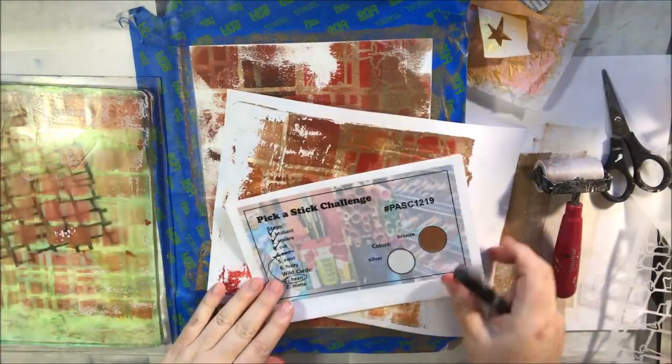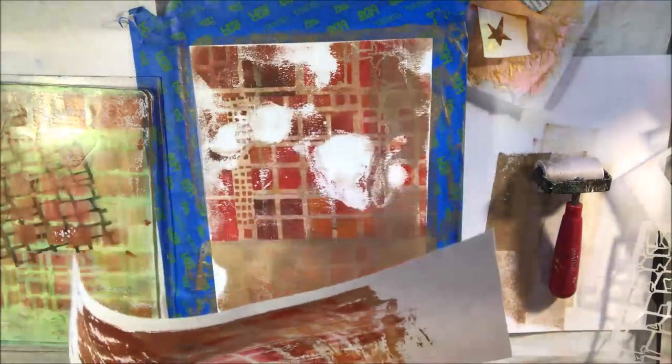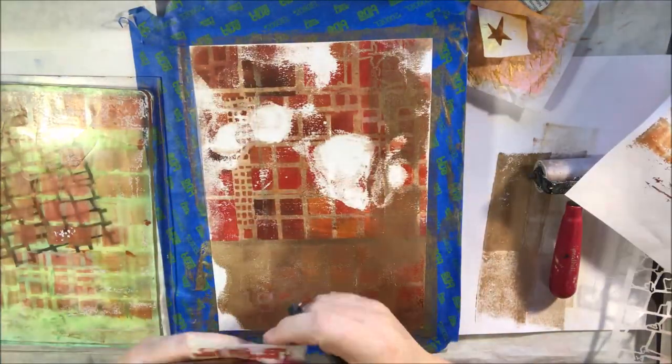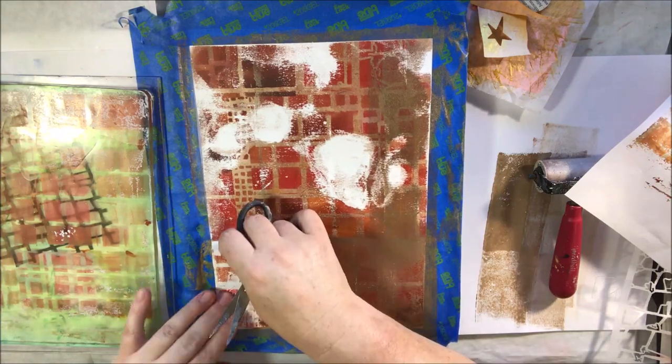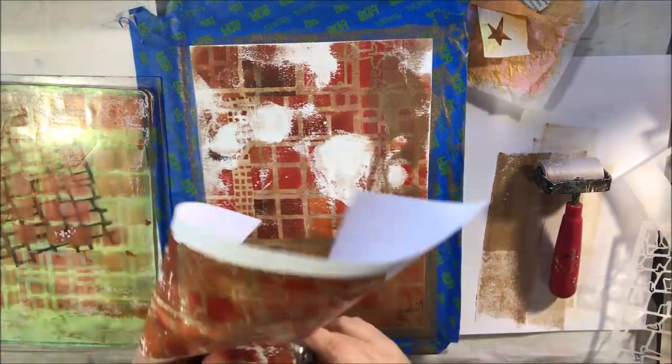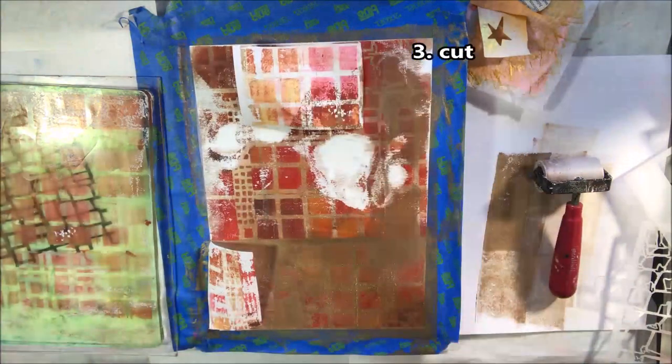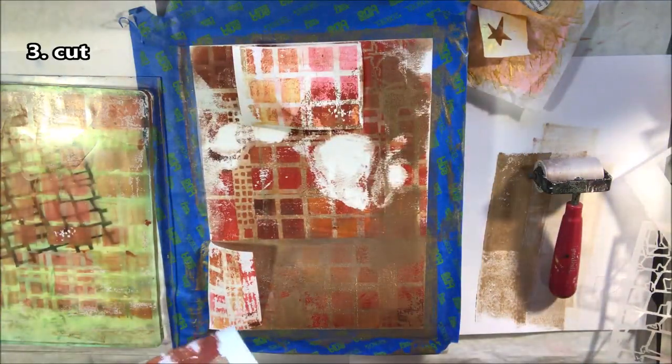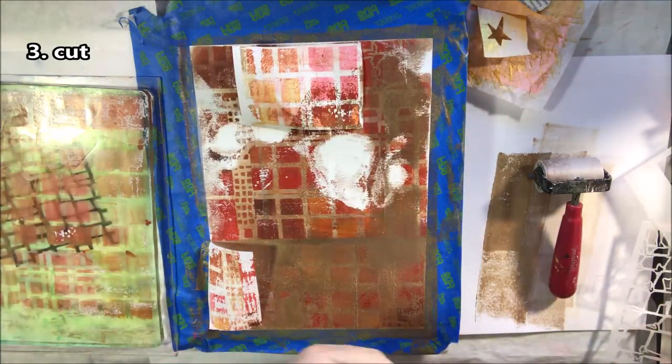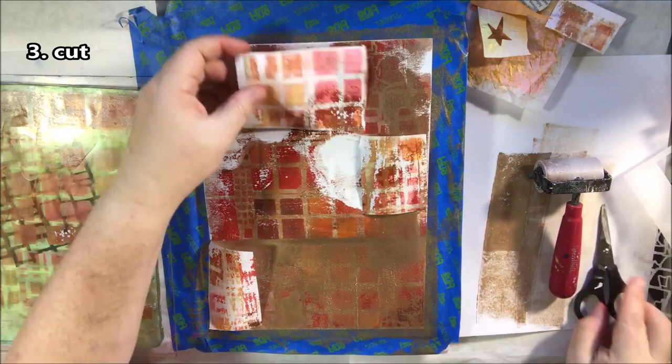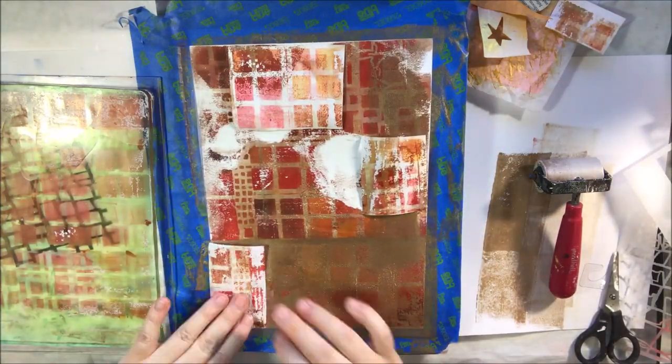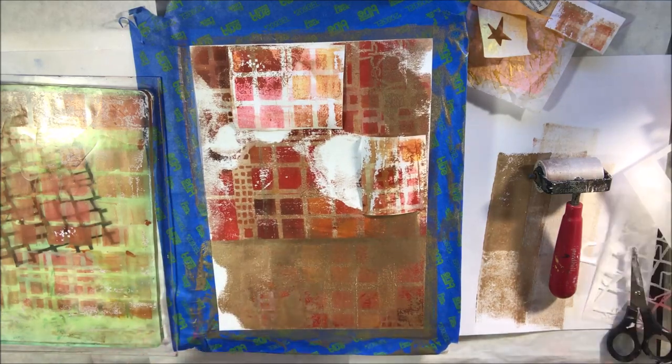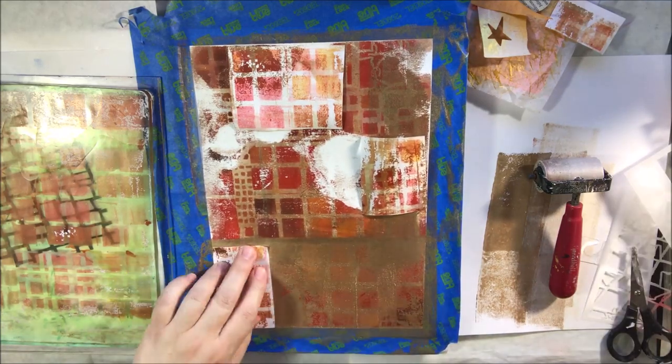With the pan pastel you end up having multiple pulls off of it if you just continue to put more paint on there. That pastel lasts on the plate for a while. I ended up getting this other kind of interesting grungy print. The next prompt is cut, so sticking with the theme of squares I would cut up some squares and maybe fill in some of that area with collage.